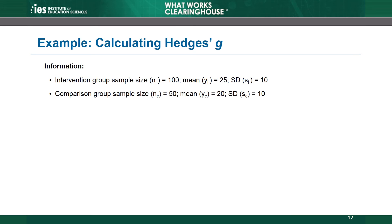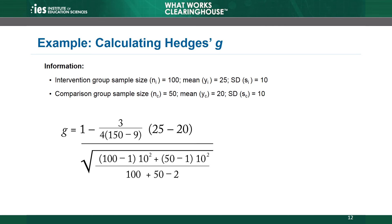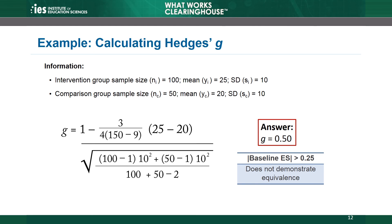Let's walk through an example of how to calculate equivalence for a continuous variable. In this example, we have the sample sizes, means, and standard deviations on a continuous measure for an analytic sample at baseline. The mean in the intervention group is 25, and the mean in the comparison group is 20. The standard deviation is 10 in both groups. Plugging these numbers into the Hedges G equation, we find that Hedges G is 0.5 standard deviations. This means the intervention group average at the pretest is one-half of a standard deviation larger than that of the comparison group. On this measure, the groups do not demonstrate equivalence at baseline, as the effect size is greater than 0.25 standard deviations.